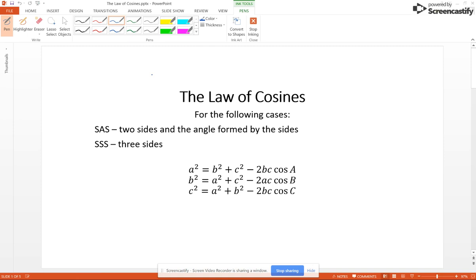The Law of Cosines is for the remaining two cases that we have: side-angle-side, which is two sides and the angle formed by the sides, and side-side-side. So the Law of Cosines has three formulas. The first one is a² = b² + c² - 2bc cos A, and the other two formulas are similar. You use the formula that you have the information for and what you're solving for.